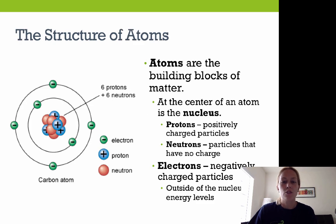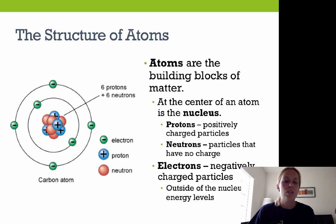We're going to start with atomic structure first. Atoms are the building blocks of matter, and at the center of an atom is the nucleus. The nucleus is made up of protons and neutrons. Protons are positively charged subatomic particles, and neutrons have no charge. Electrons are found in what is referred to as the electron cloud or the energy levels surrounding the nucleus. Electrons are negatively charged particles, and they're always located outside of the nucleus, moving around in the electron cloud.